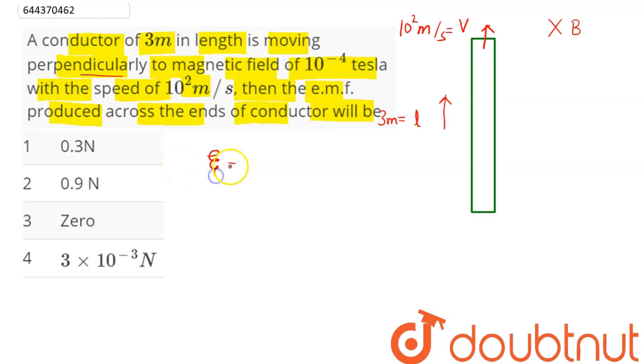So we can say here, according to the motional EMF concept, we have here induced EMF given as v cross b dot l. Now, as we can see here, velocity and length vector are parallel to each other. So we can see here, the value of motional EMF in this case will be 0.